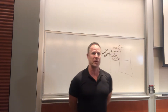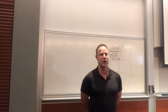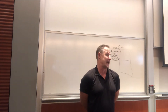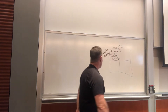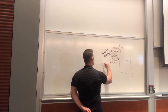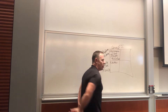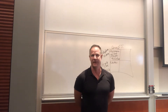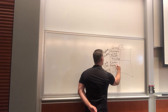You can use DMAIC to reduce your personal debt. The Y is how much debt you have or your debt-to-income ratio, and the X is trying to figure out where you're spending it. Then we have Lean, where the Y is typically cycle time and the X is non-value-added steps or activities. So Lean is the removal of waste.